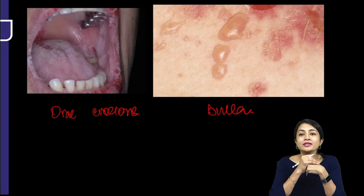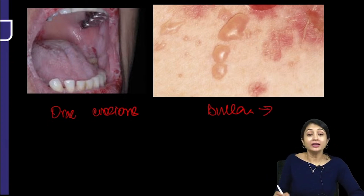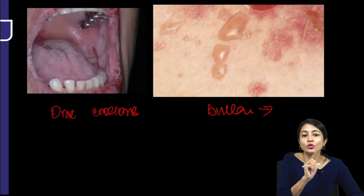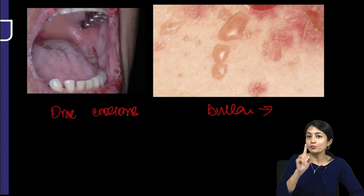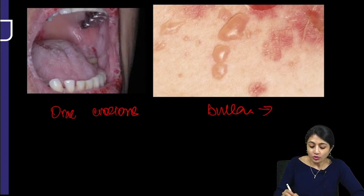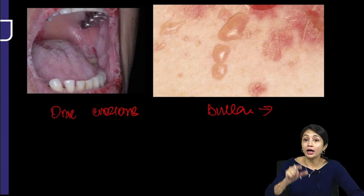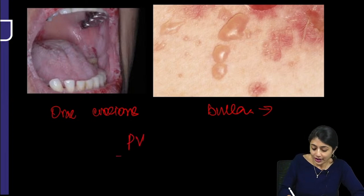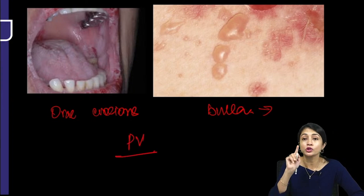Some of you answered prematurely as bullous pemphigoid. I did not give you the characteristics of the bulla. But even if I did not, if I gave you oral erosions and an image like this, please do not think of bullous pemphigoid. When you get oral erosions which are so extensive and put alongside a bulla picture, it would be pemphigus vulgaris.